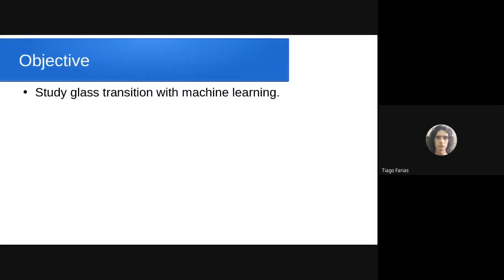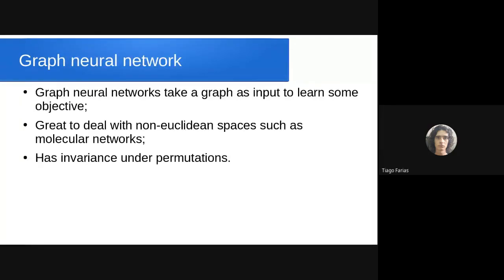The objective of this paper is to study glass transition with machine learning. Before I talk about how you can use machine learning with glass transitions, I'll talk about a kind of neural network called graph neural network. A graph neural network is a neural network that takes a graph as an input to operate some function or learn an objective.